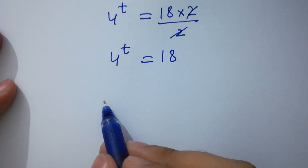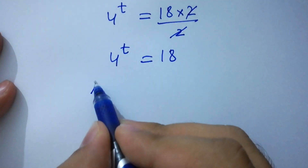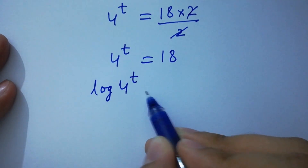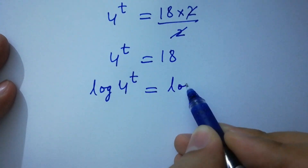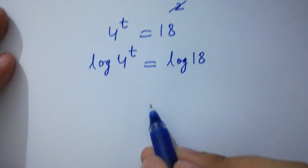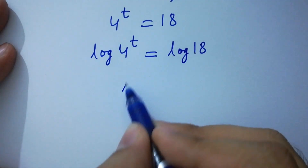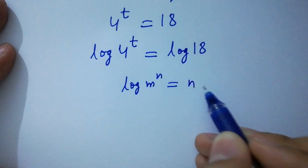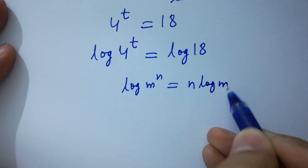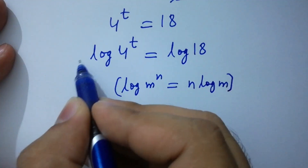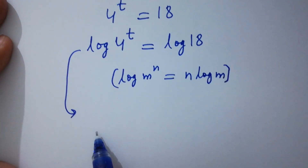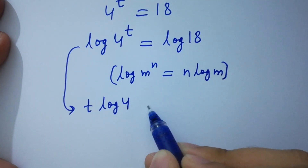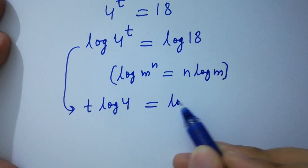To solve this, take log on both sides: log 4 to the power t equal to log 18. Since log m to the power n equals n log m, it will be t log 4 equal to log 18.